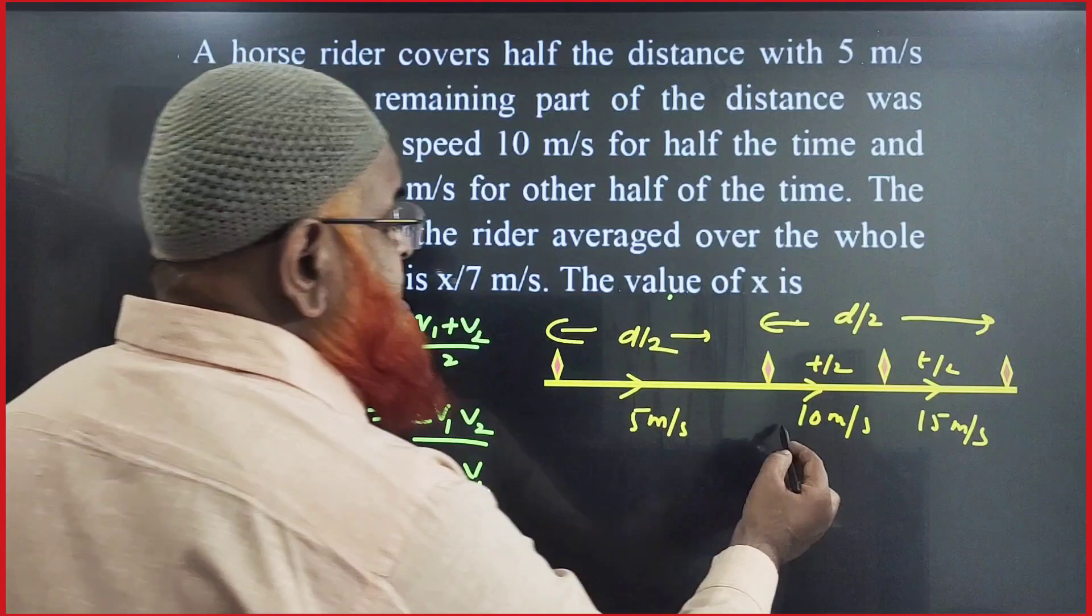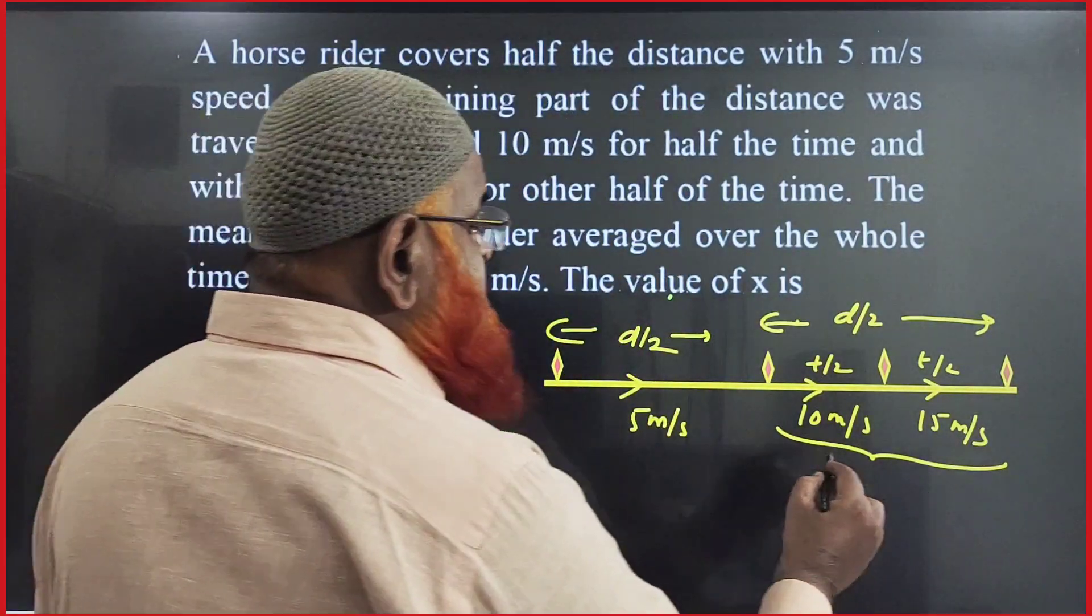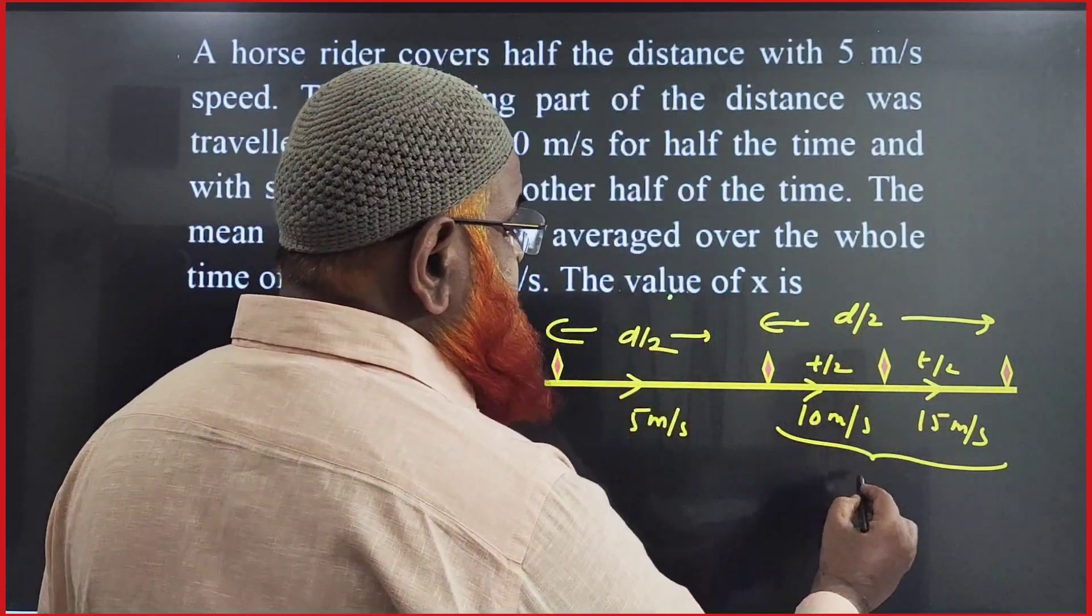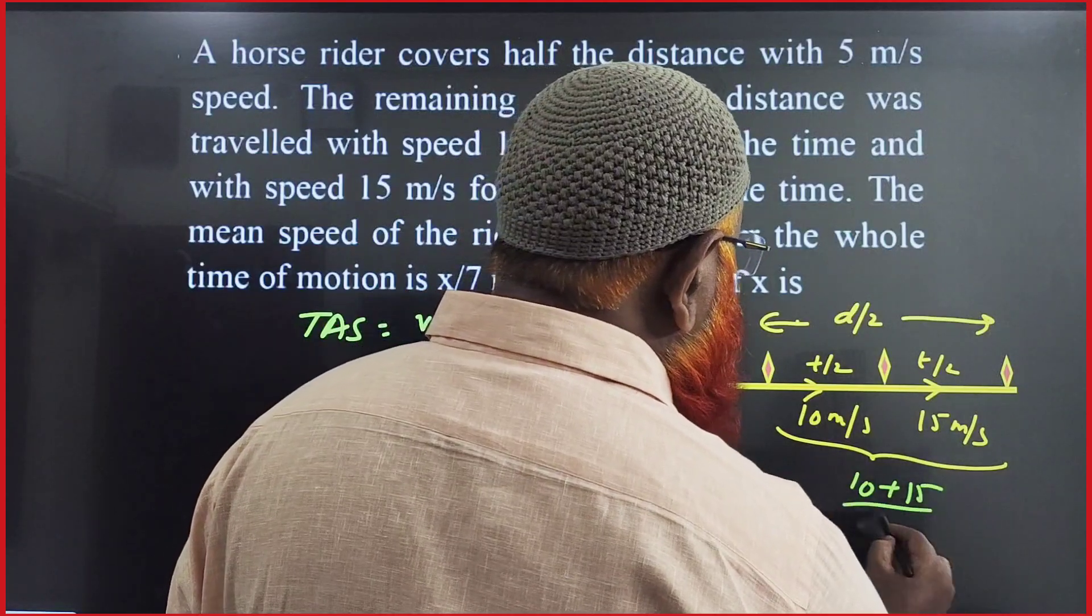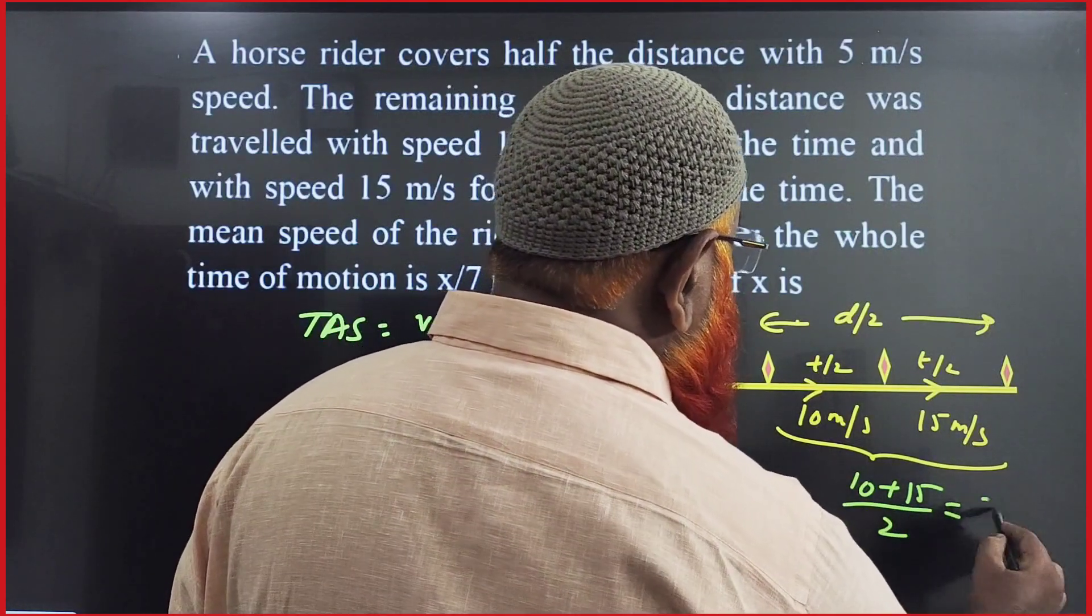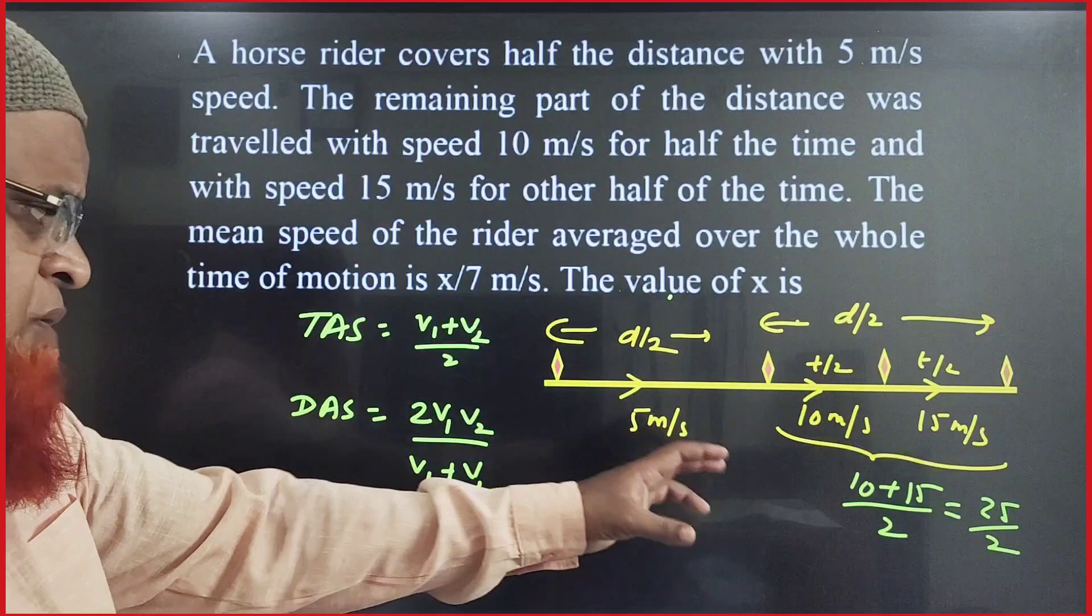First we'll find the time average speed. For half the time at each speed, we write (10 + 15)/2, which equals 25/2. This part is complete.